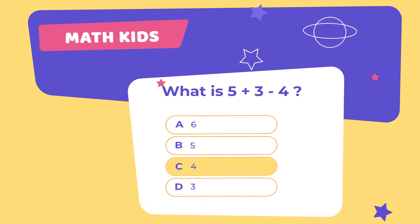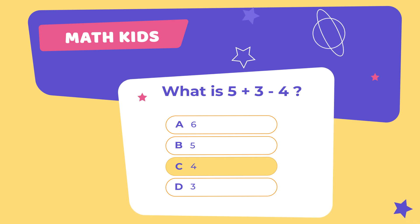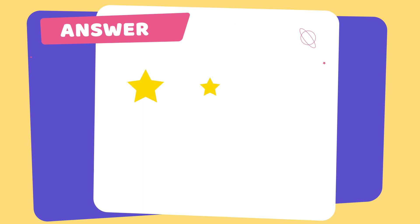You're right! Your answer is correct! Sarah starts with 5 stars. She collects 3 more stars, making it 8 stars. Then, she gives 4 stars away. How many stars does she have left? Let's count together. 1, 2, 3, 4. Great! Sarah has 4 stars left.